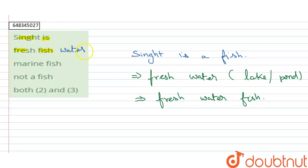in it: fresh water. So other options—marine fish is not a correct option, and it's a fish—so our answer is option A: fresh water fish. Thank you.